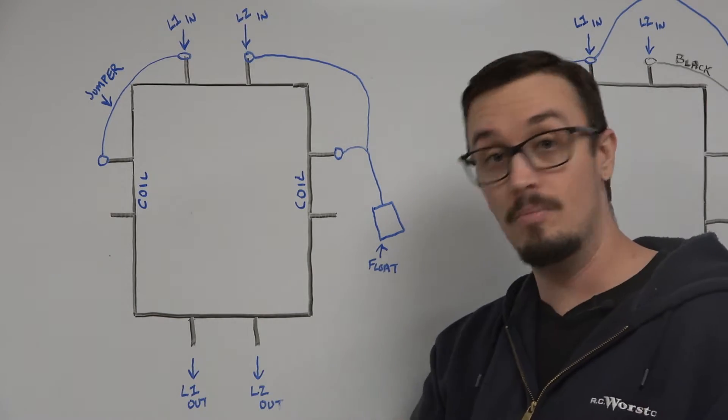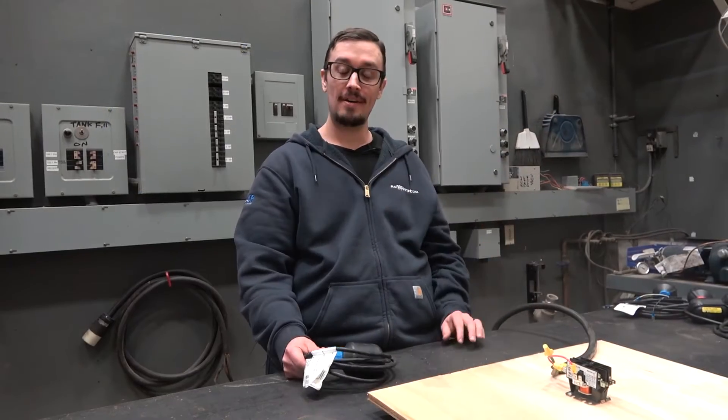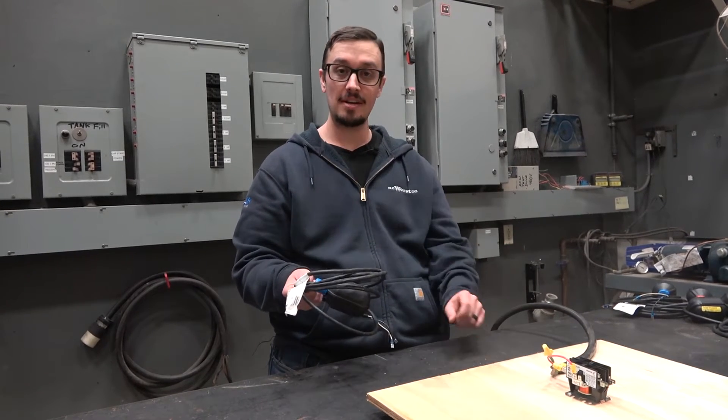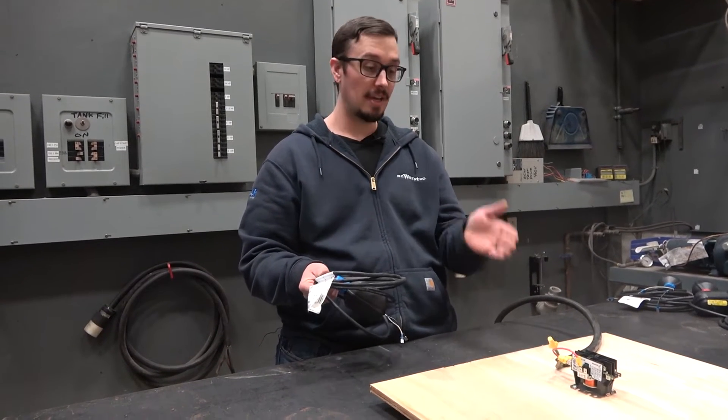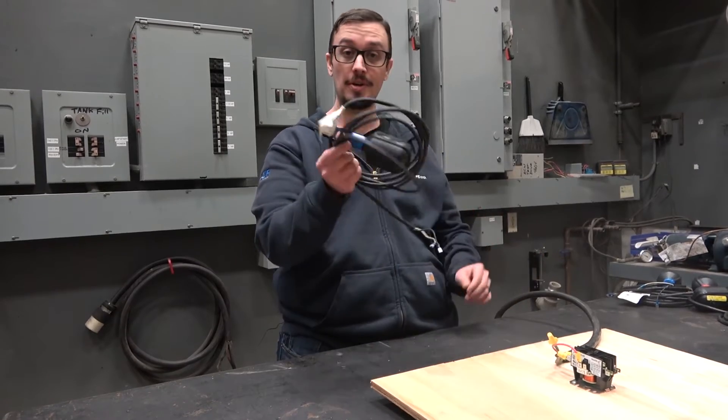So let's head out to the shop. Okay, so here we are around the shop. I've got my float switch, I've got my contactor set up. So let's take a look at the contactor and show you how to wire up a single float switch.